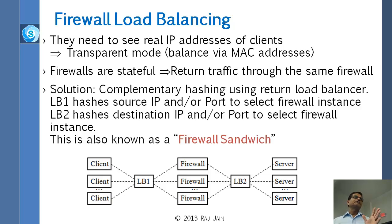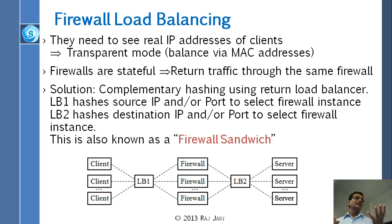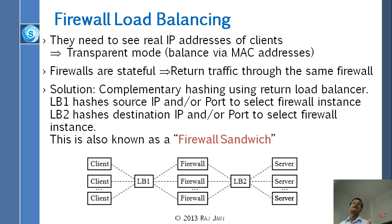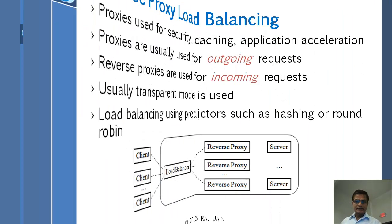That IP address will always go to the same firewall if we are using source IP address-based load balancing. If we're not using that, then all of them will see a DOS — denial of service — attack. In the data plane, you do not want to be doing line-speed sharing of information, because information is changing at line speed. That is why you need this arrangement.